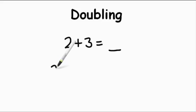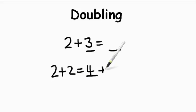Well, if I know my doubles fact of two plus two, what's two plus two equal? That's right, it equals four. And I know that three is only one more than two. Well, then I can just say four plus one, and I find my answer of five. So that tells me that two plus three equals five.